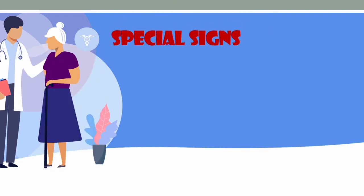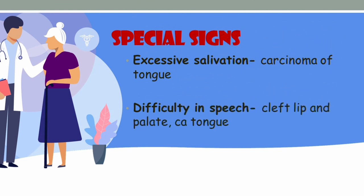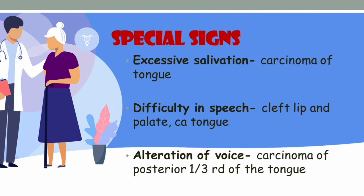Now we will see some special signs to know while examining the tongue. First is excess salivation — if a patient in the OPD is covering their mouth with a handkerchief to prevent saliva from coming out, this is a very common and specific symptom of carcinoma of the tongue. Second is difficulty in speech, specifically dysarthria — an articulation problem pointing to cleft lip and cleft palate in children, or carcinoma tongue in the elderly. Third is alteration of voice, which should prompt consideration of carcinoma of the posterior one-third of the tongue, in addition to laryngeal carcinoma.